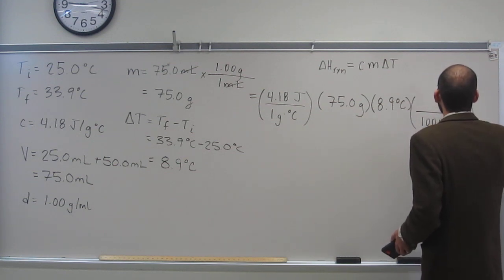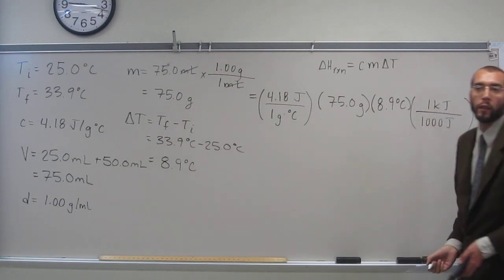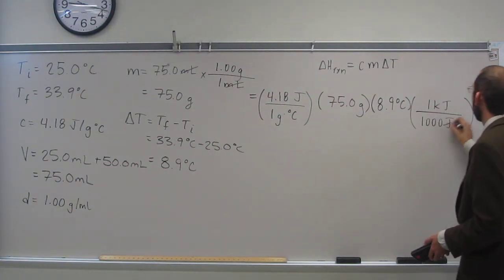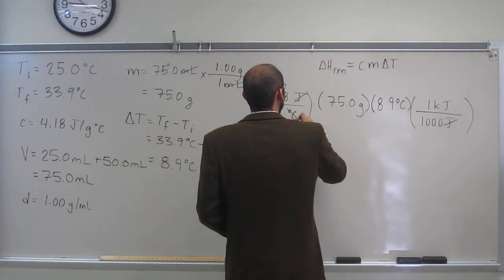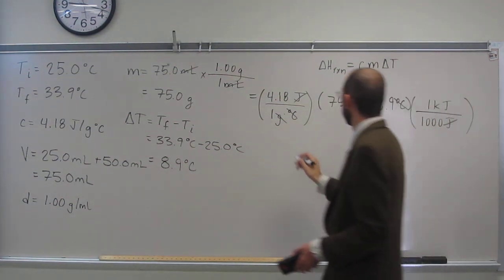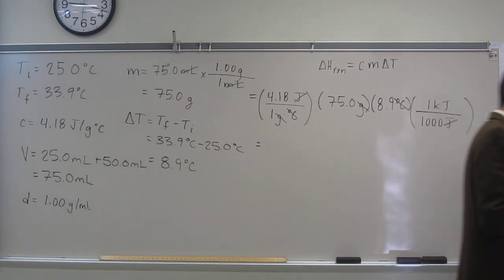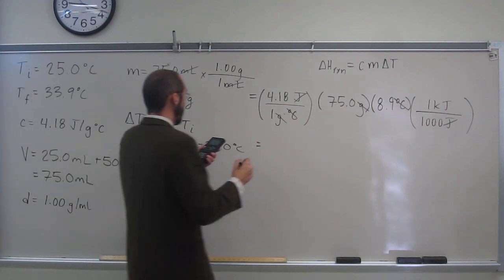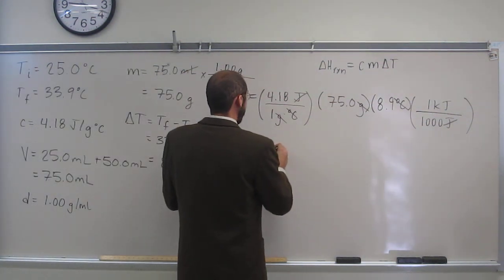One thousand joules per one kilojoule. That should give us kilojoules. Let's cancel, all right, come up with kilojoules. So 8.9 times 75 times 4.18 divided by one thousand. And how many sig figs are we going to? Two, right. So the delta H of this reaction is going to be 2.8 kilojoules.